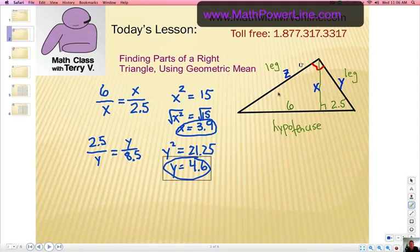Alright, so in order to have a right angle up here, and the hypotenuse split into those two parts, Y would have to be 4.6. And the final part of this is figuring out Z, which is the other leg of the triangle.